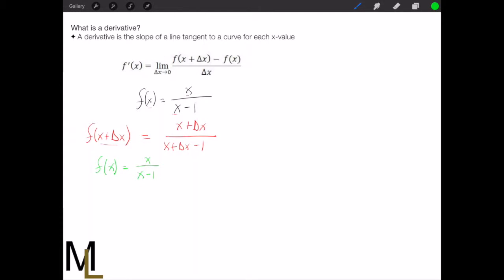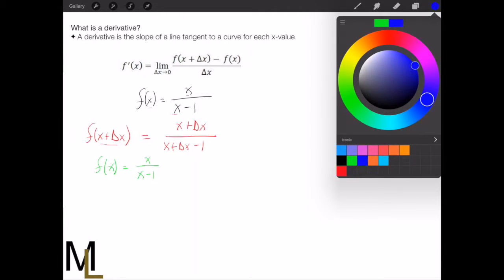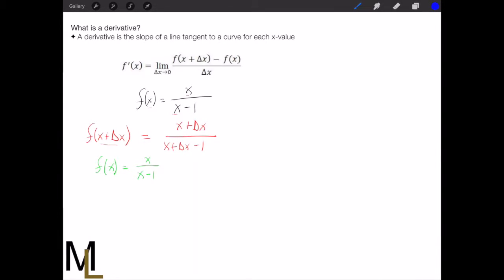Great, and now we will write down the definition of the derivative. The definition of a derivative is the limit as delta x goes to 0 of this guy.